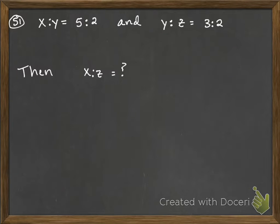Number 51 says x to y is 5 to 2, and y to z is 3 to 2. So what's the ratio of x to z?